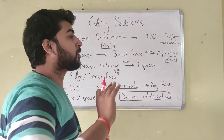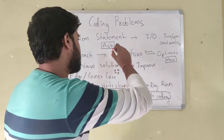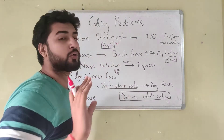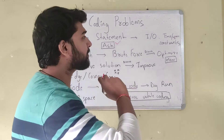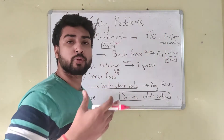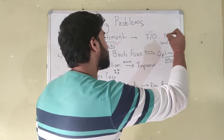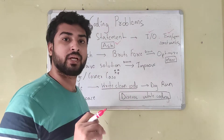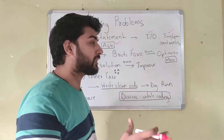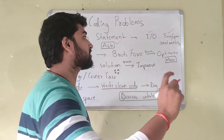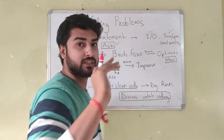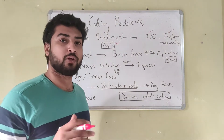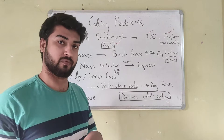Right after you get the problem statement, the most important thing is to ask. Whatever doubts you have, ask frankly — don't hold back. Make sure you're clear on the input and output: what is the input, what should be the output. Also make sure you're clear about the time and space constraints. Be very clear and thorough with the problem statement so you don't have any confusion or misunderstanding afterwards.